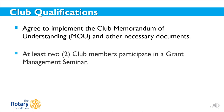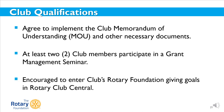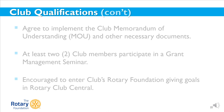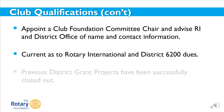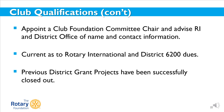Clubs that want to apply for district or global grants must also be qualified. Districts are responsible for qualifying their clubs each year. To become qualified for this grant cycle, your club must first agree to implement the club memorandum of understanding. Second, have at least two club members participate in a grant management seminar. And lastly, you are encouraged to enter your club's Rotary Foundation giving goals in Rotary Club Central. Appoint a club foundation committee chair and advise RI and the district office of the name and contact information. Be current as to Rotary International and District 6200 dues. And ensure all previous district grant projects undertaken by the club have been successfully closed out.